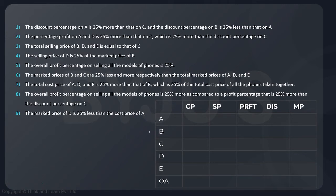I have made this table in which A, B, C, D, E are representing the products and this is overall. Here I have CP (cost price), SP (selling price), profit percentage, discount percentage and the marked price.